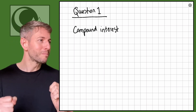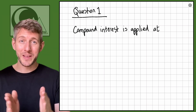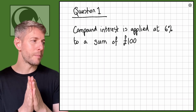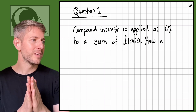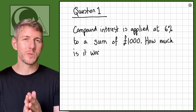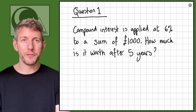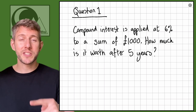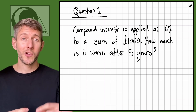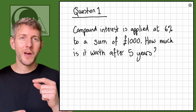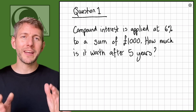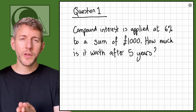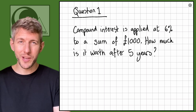Let's have a look at a question. Compound interest is applied at 6% to a sum of £1,000. How much is it worth after five years? Compound interest means to continuously increase by the percentage, but you're not increasing the amount that you start with — you're increasing the amount that you have at the start of each year.